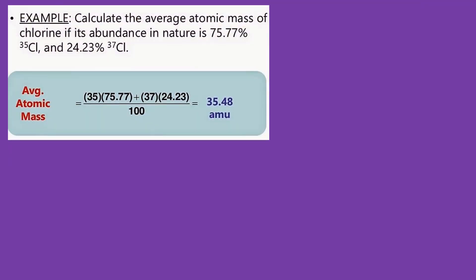In our first example, calculate the average atomic mass of chlorine if its abundance in nature is 75.77% for chlorine-35 and 24.23% for chlorine-37. To get the average atomic mass, we simply multiply the atomic number of chlorine by its relative abundance in nature, then add the two products, then divide by 100. The result is 35.48 atomic mass units for chlorine.